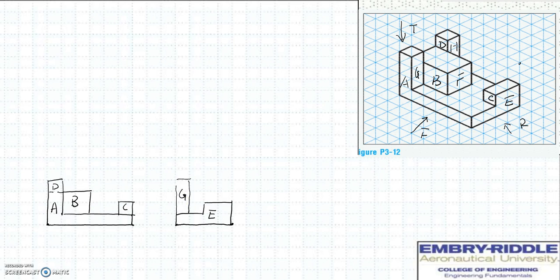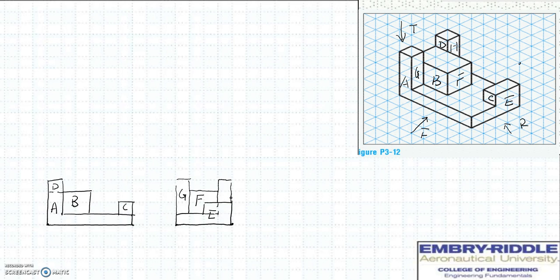Surface F is next to G, two units high, and shares a vertical edge with surface G. From that vertical edge, we draw surface F, which is two units deep. Because part of surface F is blocked by surface E, we need to continue with a hidden line to finish F. Surface H is next to F, behind surface E, and shares the same height as surface G. It is also blocked by surface E, so we use a hidden line to finish surface H. This is the complete right side view.